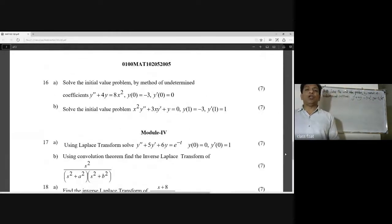Solve the initial value problem by the method of undetermined coefficients: y'' + 4y = 8x², y(0) = -3, y'(0) = 0. We have to solve this problem using the method of undetermined coefficients.